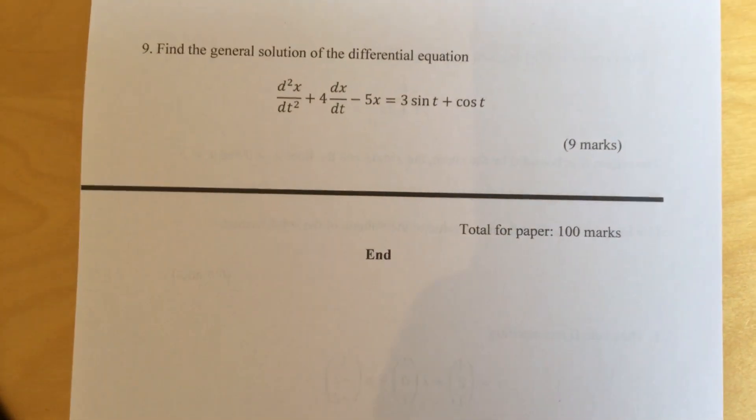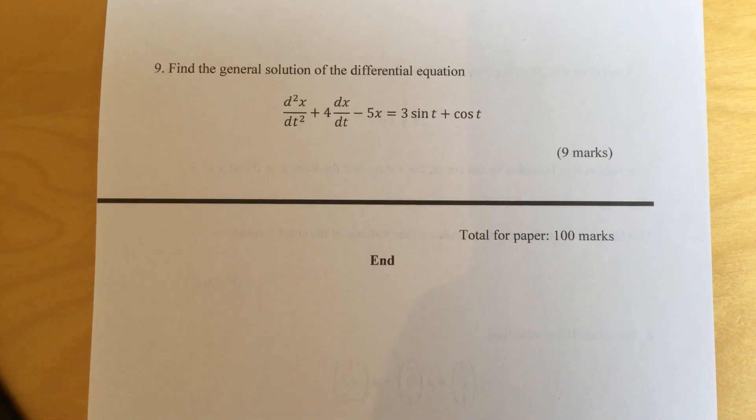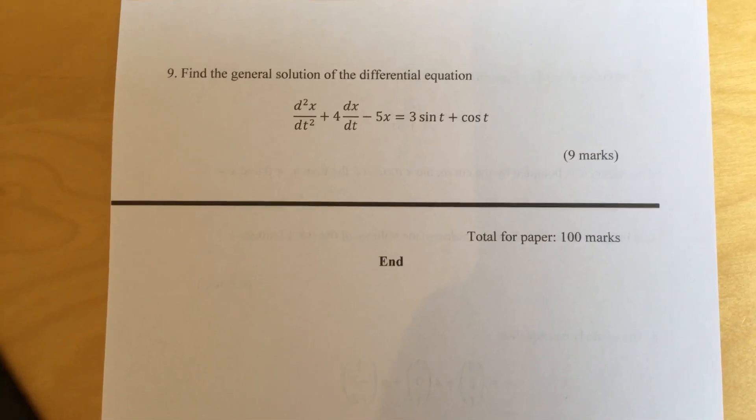The last question, question nine. Find the general solution of the differential equation d²x/dt² plus 4 dx/dt minus 5x equals 3t plus cos t.